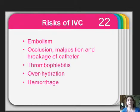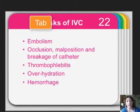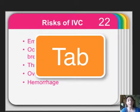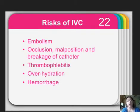Risks of IV catheter placement include embolism, occlusion, malplacement, and catheter breakage — which is a big deal, as we don't want the catheter to break off. You may also get thrombophlebitis, which is swelling of the vein; the vein will feel like a hard rope if thrombophlebitis is occurring. There may also be overhydration if fluid rate is not monitored carefully, and hemorrhage.